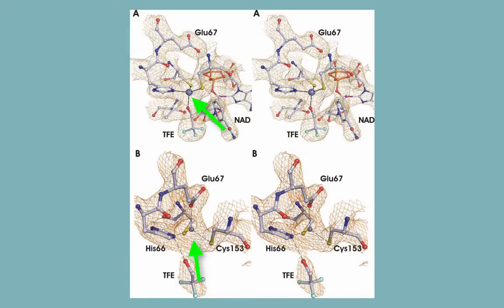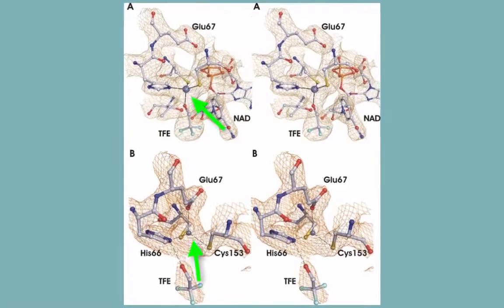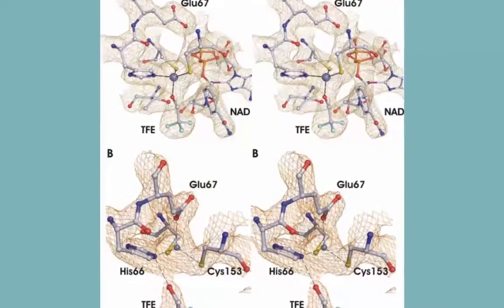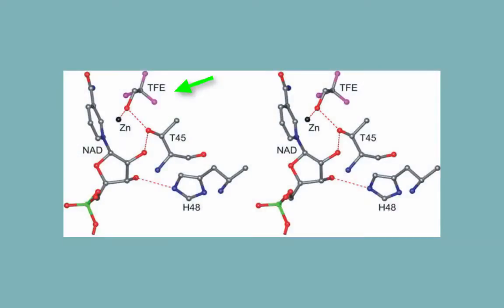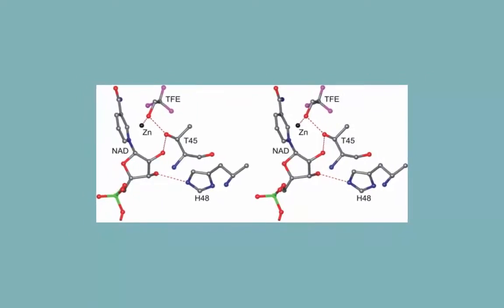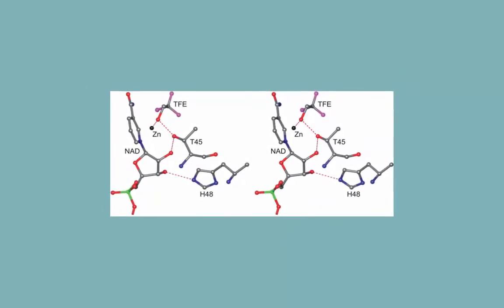In order to function, YADH1 requires zinc ions as cofactors in its active site, where it ligates the oxygen of the substrate, helping to orient it. In addition, the substrate oxygen enters into hydrogen bonding with threonine-45, which along with NADH and histidine-48 make up a proton relay system. While the orientation of substrate and coenzyme in the active site has been elucidated by x-ray crystallographic studies, there is no conclusive evidence to date for the chemical mechanism of the enzyme-catalyzed reaction.